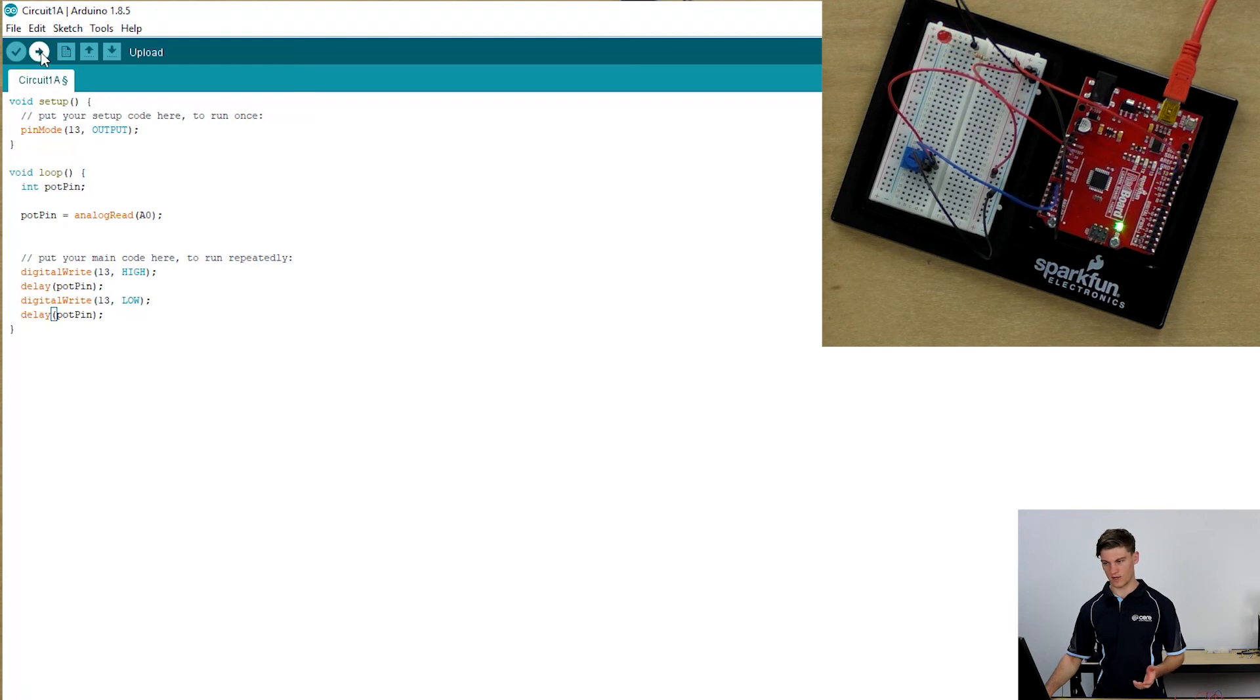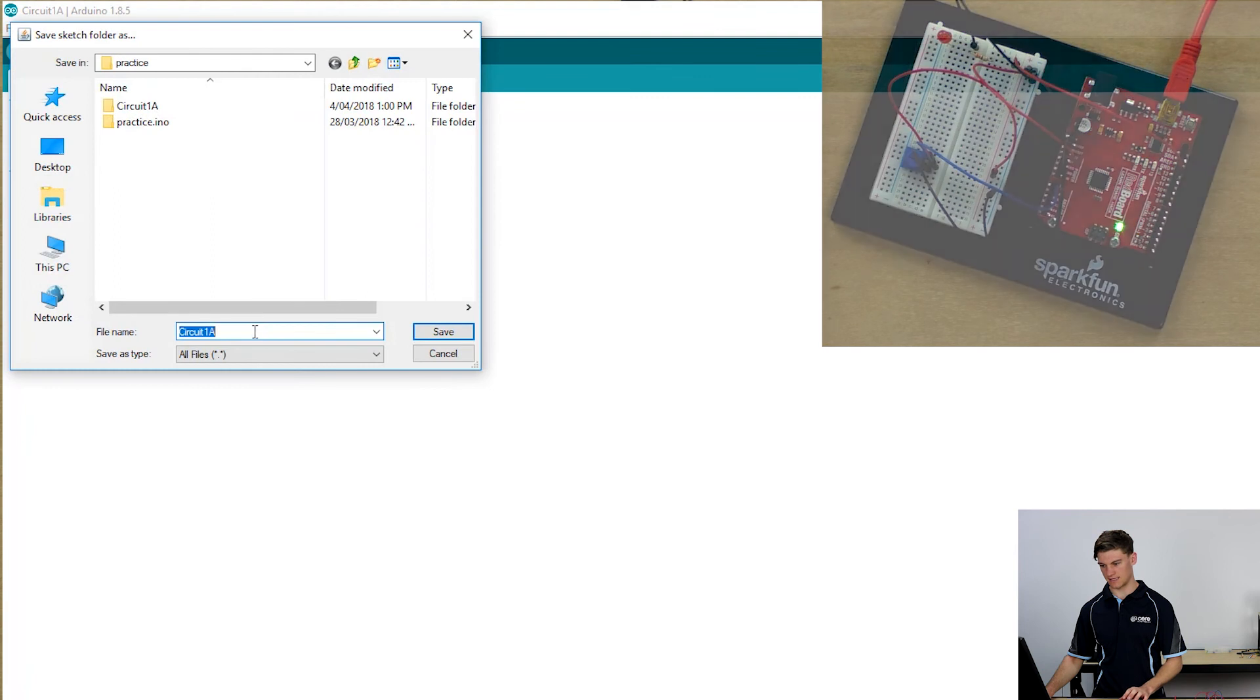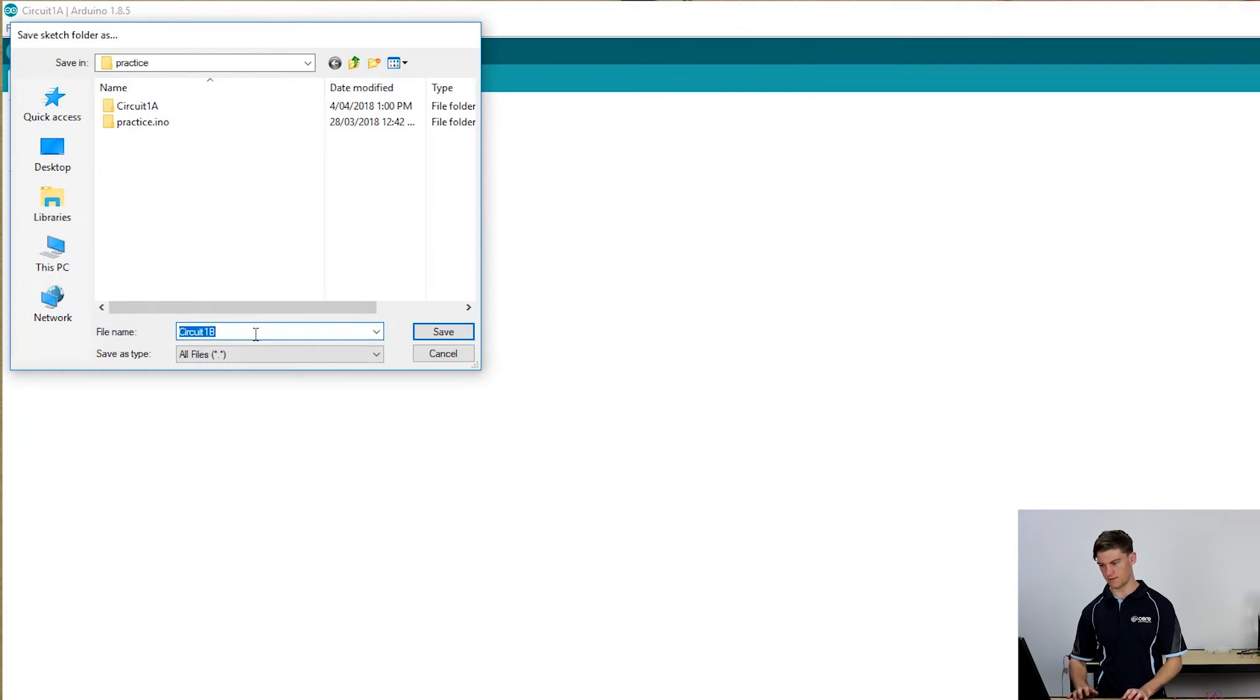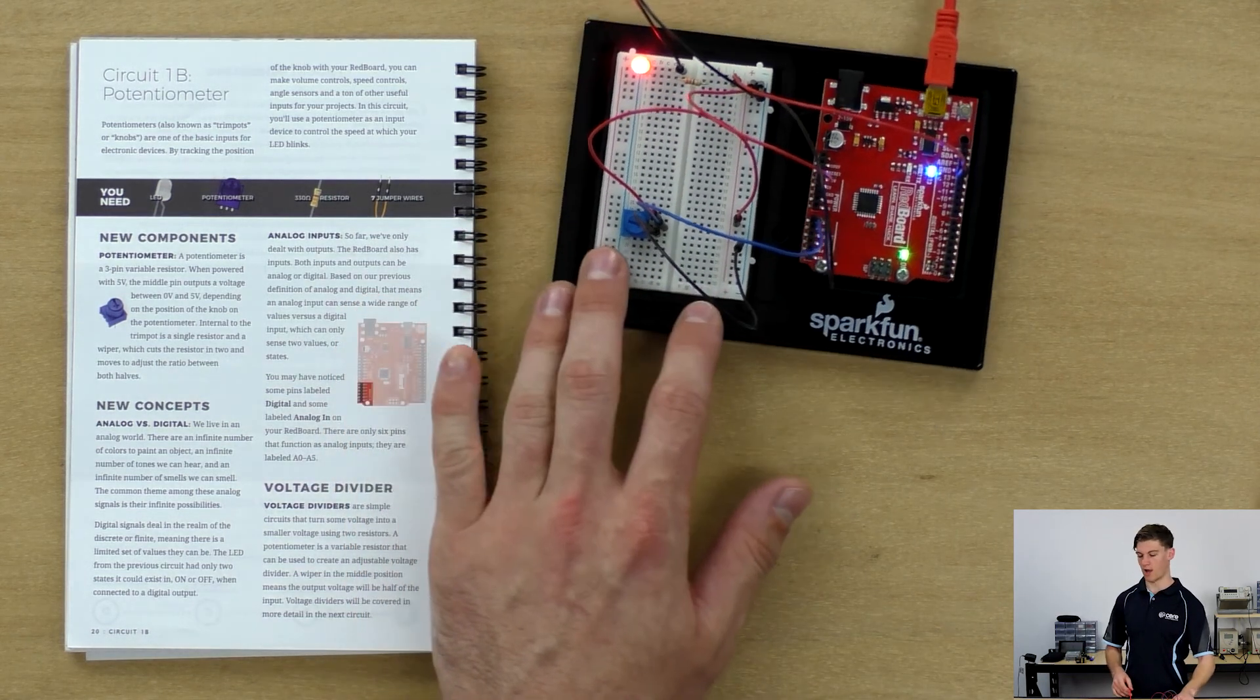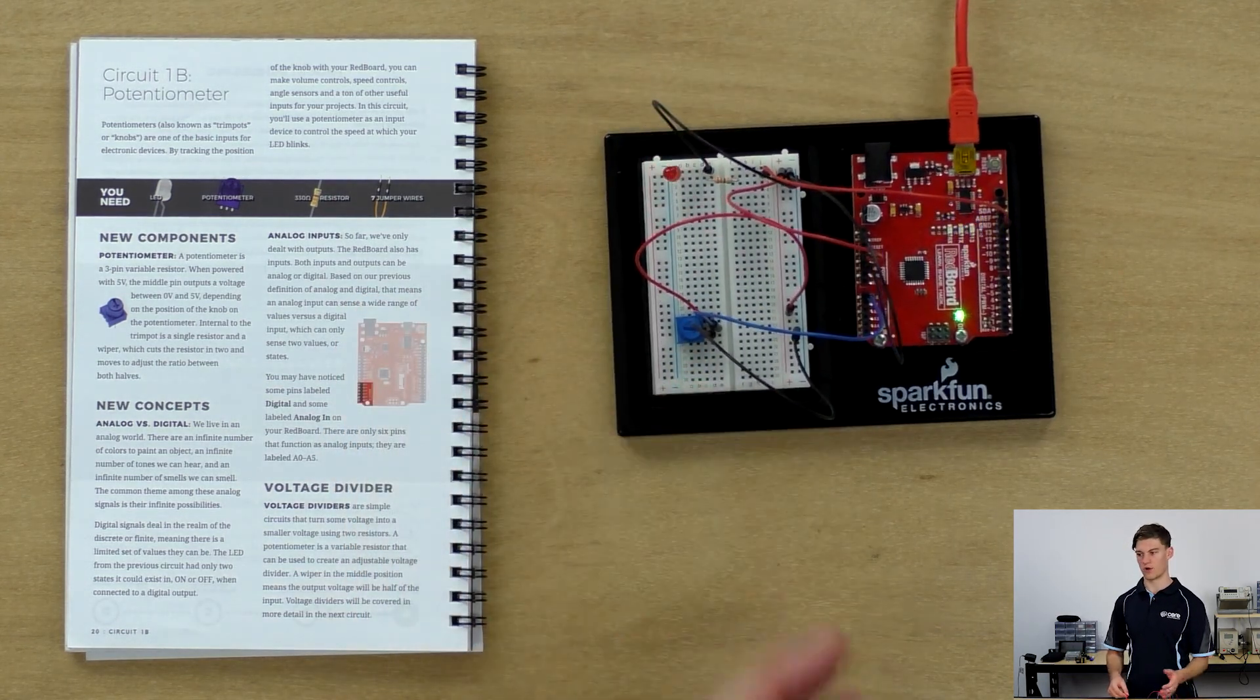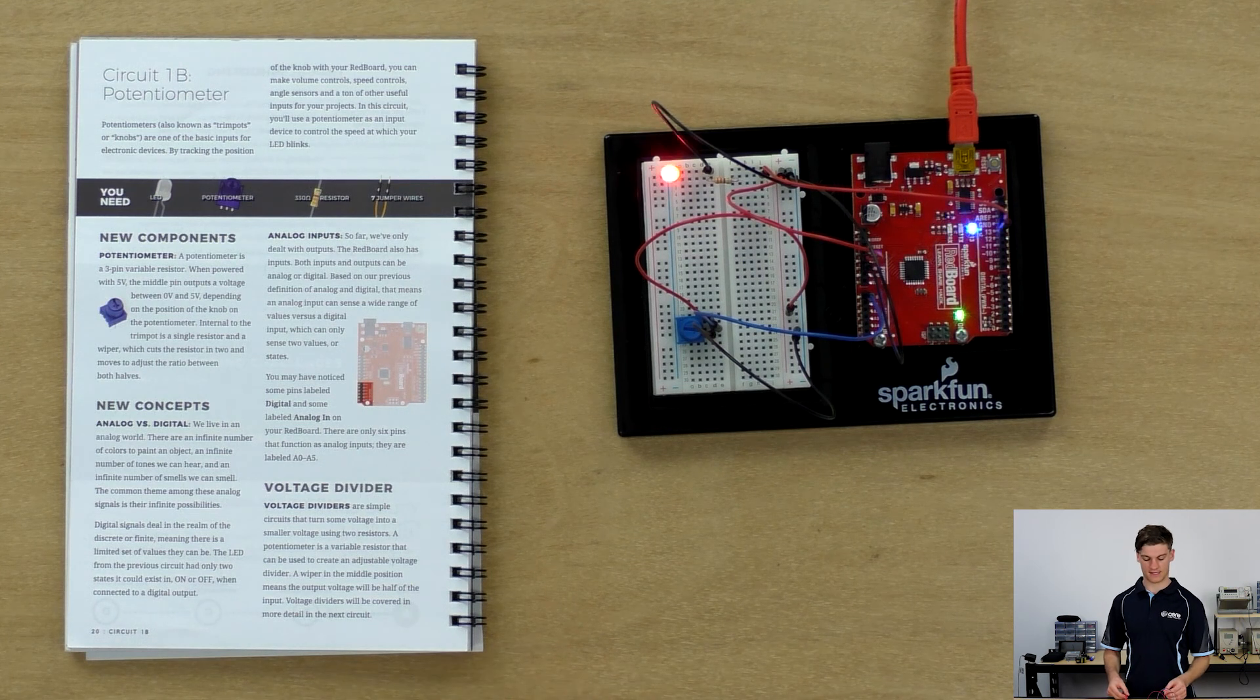Once that's done, we're going to file save as, and this will be circuit 1B. Then we will upload that sketch. I'll first compile it and make sure that it's got no errors or bugs in the code. It's uploading. Now that it's done uploading...